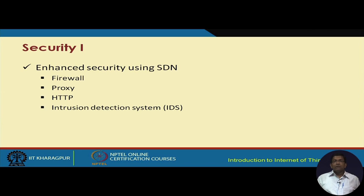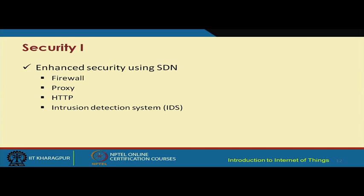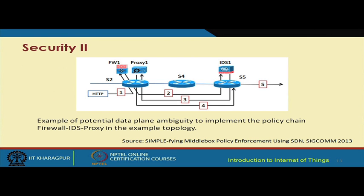Another very important thing is that through SDN one can have an enhanced level of security in the network. In this case, we can take help of the firewall, proxy, HTTP, IDS, and these can provide improved security with respect to this technology. Just briefly — we are not going to discuss improving security with SDN in much detail — but this is a paper published in SIGCOMM in 2013.